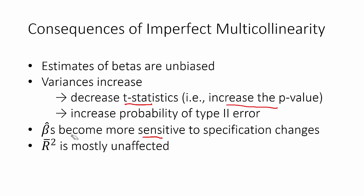The fourth and final consequence is that the adjusted R-squared is mostly unaffected from imperfect multicollinearity. So it may go up a little bit, may go down a little bit from what it should be, but it's pretty much unaffected.